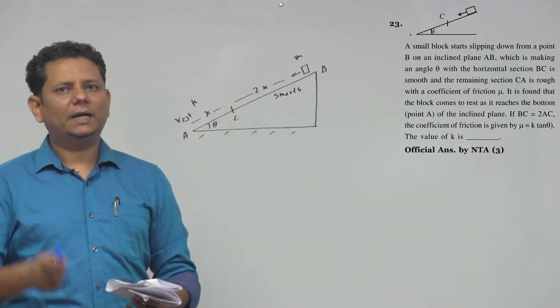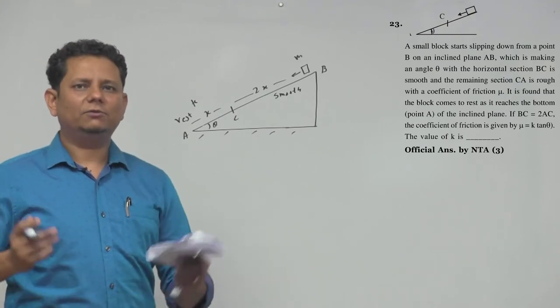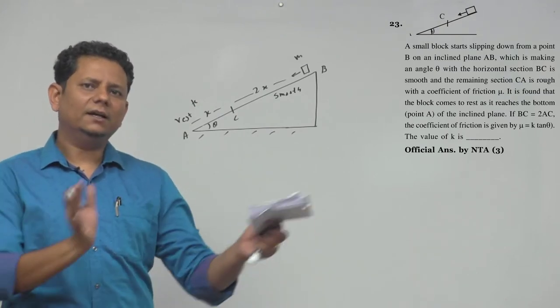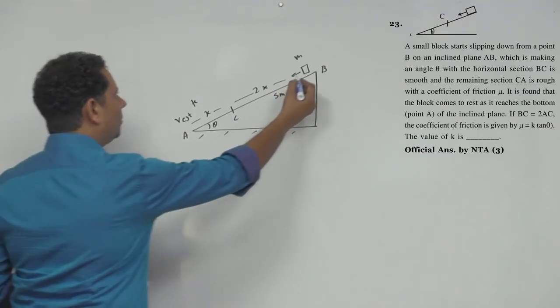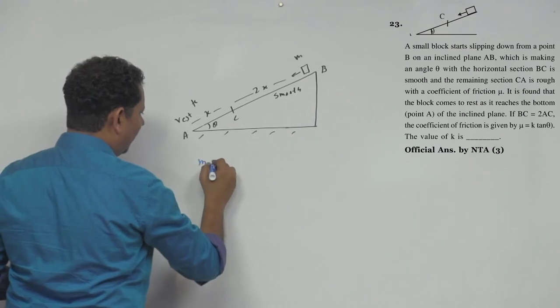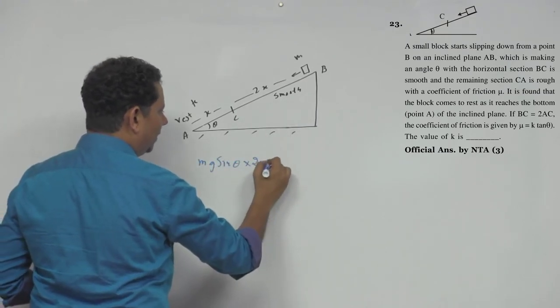Because the change in kinetic energy is 0, we will say that the work done by all forces equals 0. So this sum is 0. You can write Mg sin theta, multiply by 2x displacement, plus this location is the journey of Mg sin theta force.